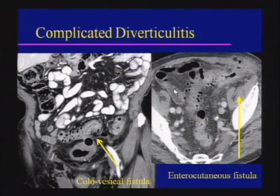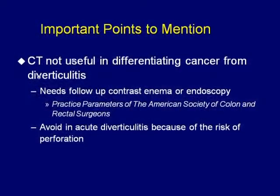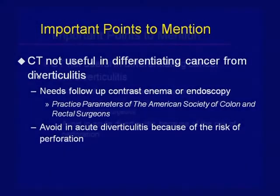In complicated diverticulitis, look for potential fistulae. There is an obvious colovesical fistula with a thickened sigmoid and multiple diverticula, and here a tract extends to the skin representing an enterocutaneous fistula. When you have diverticulitis, mention that CT is not useful in differentiating cancer from diverticulitis — these patients need follow-up contrast enemas or endoscopy. Avoid invasive procedures or endoscopy during the acute presentation due to the risk of perforation; wait until symptoms have resolved.